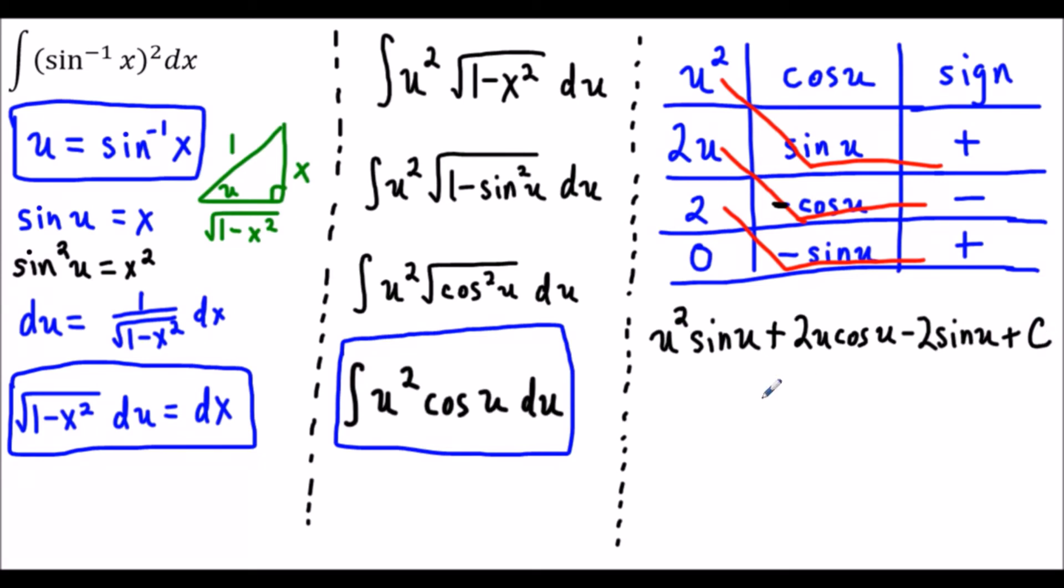To write out our final answer now we have to substitute back in terms of x. If u is equal to sine inverse x then u squared would be sine inverse of x squared. We'll have in parentheses sine inverse of x squared. Now this next part sine of u we could refer to the triangle or our definition. Sine of u is equal to x or we could say opposite over hypotenuse is x over 1 or just x.